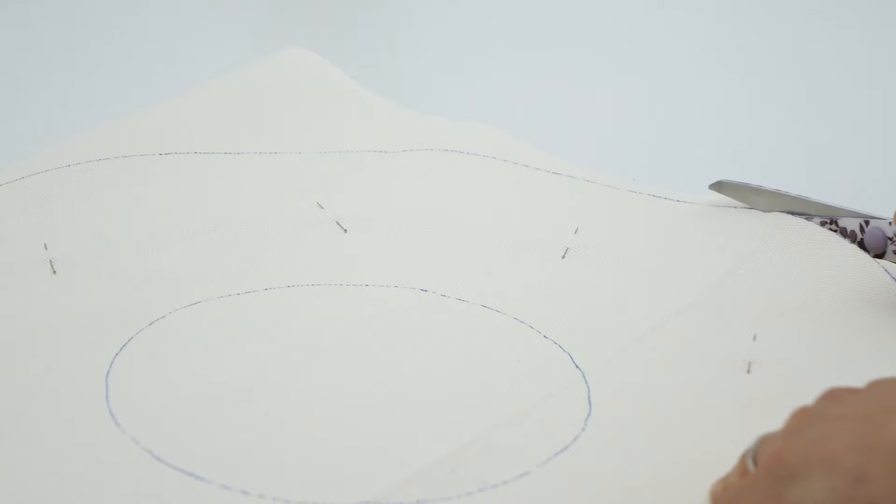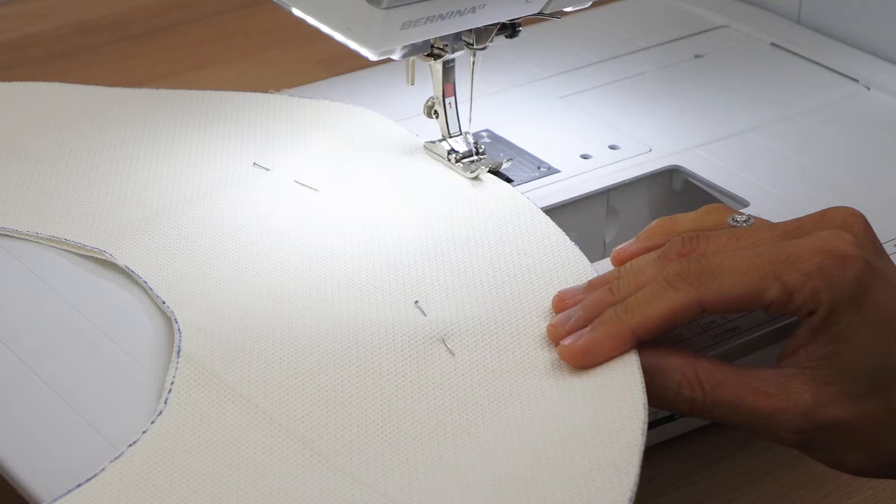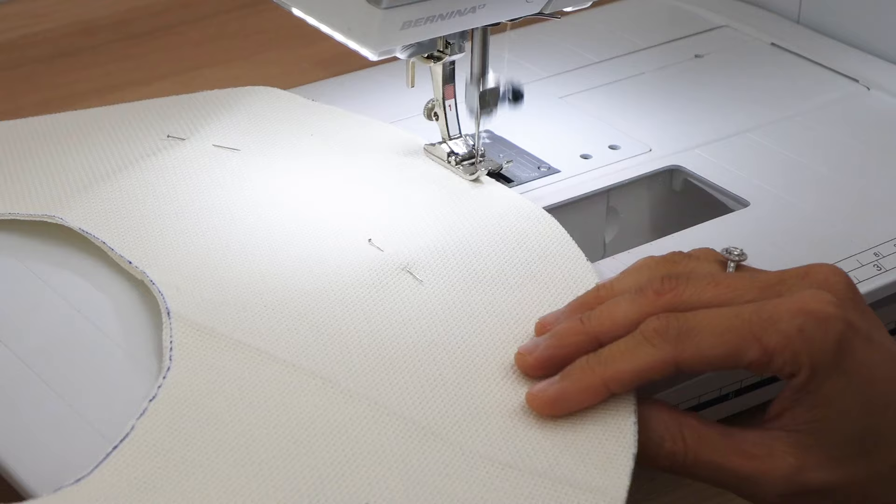To have both layers stick together, I will quickly pin them, cut the shape out and make a zigzag stitch all around with the sewing machine.